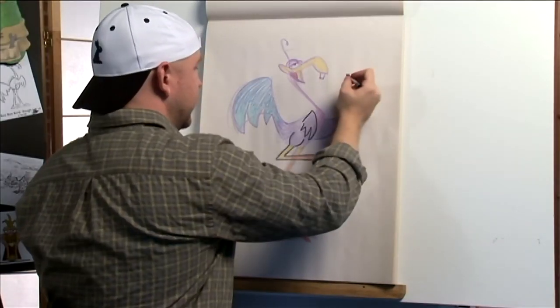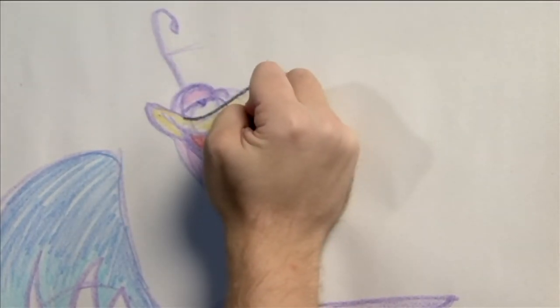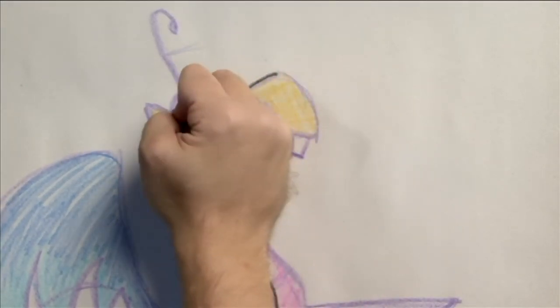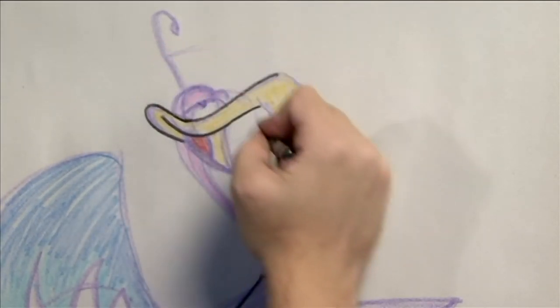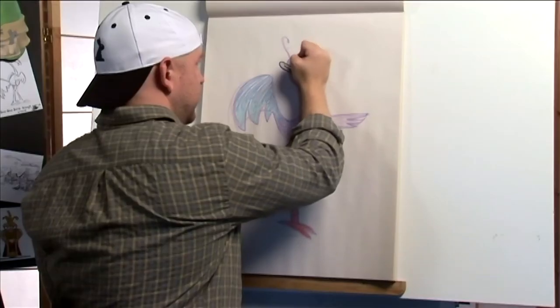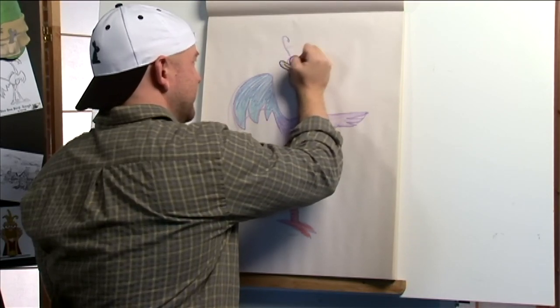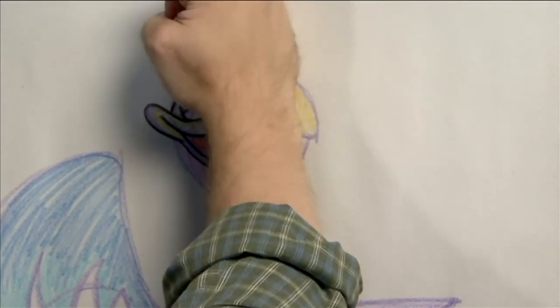I'm going to move up here just for the fun of it. And I'm going to start on his beak. And give him a nice big smile. And then the cheek goes out. And his big, lazy, happy, goofy eyes. The back of his head. And his feather.